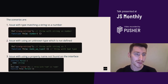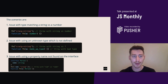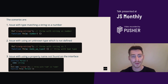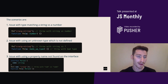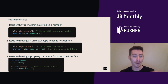So these are the scenarios. Scenario one is going to be an issue with a type matching a string versus a number — we've defined a function with a type of number, but we're calling the function with a string. Scenario two is where there's an issue with using an unknown type which is not defined — we're defining our function with a type which does not exist, and we're calling our function with a string. And then scenario three, where there's an issue with using a property name not found on the interface — we've defined an interface, a function which should use this interface, and now we're calling that function handing it an object with the wrong property name.